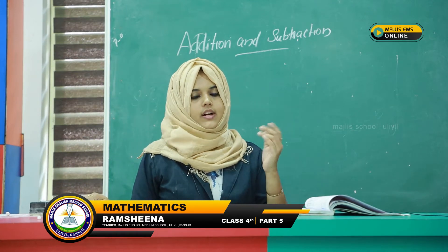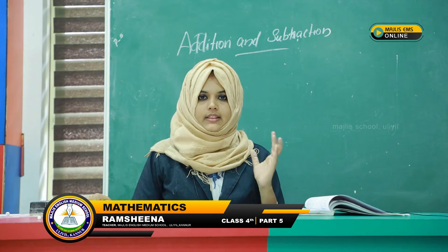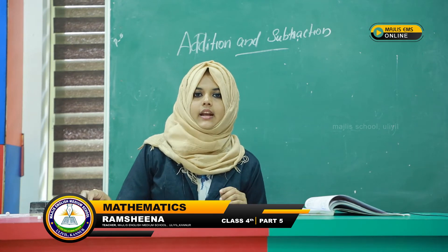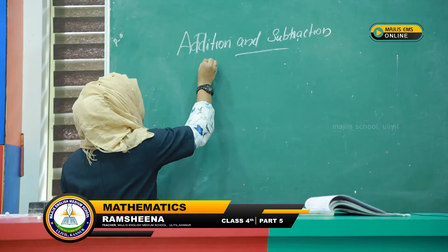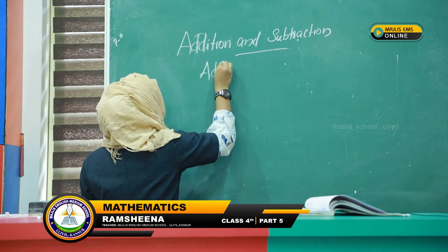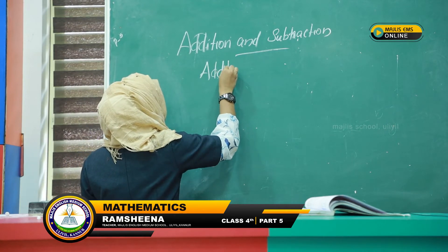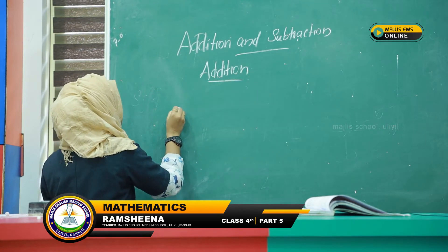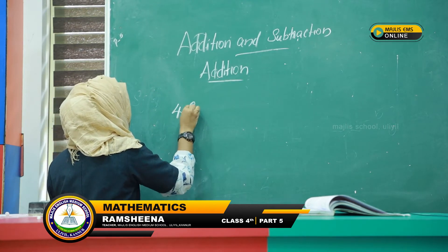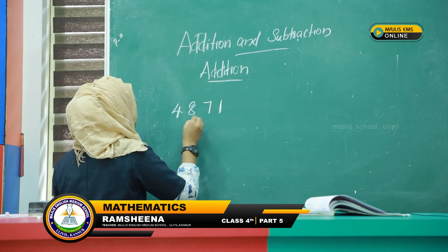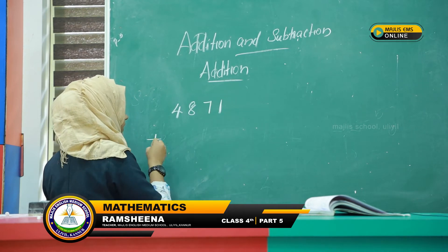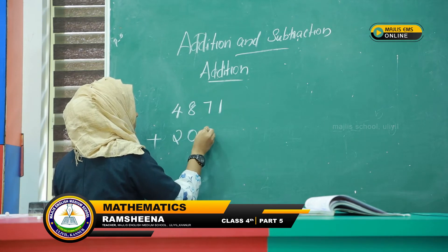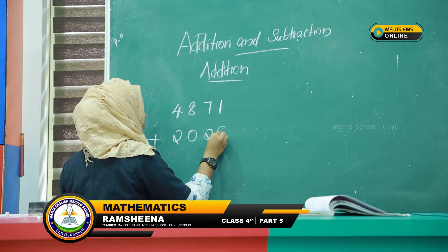We already learned addition of 3-digit and 4-digit numbers. Let us revise them. First one: addition. The number 4871 add 2029.